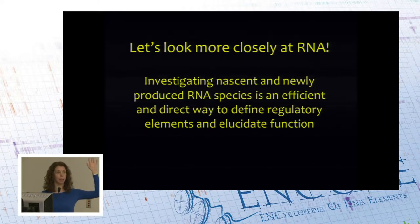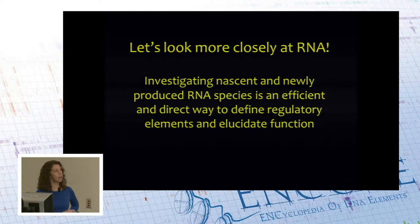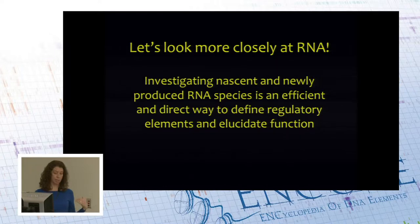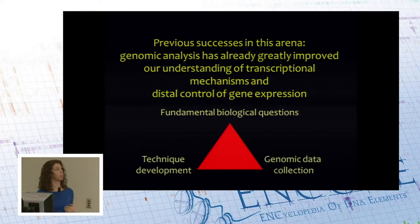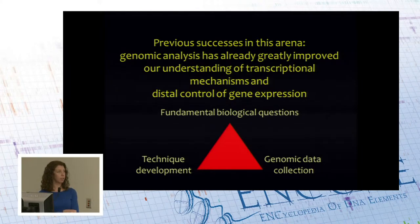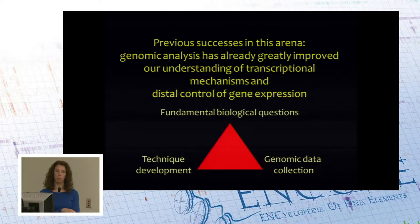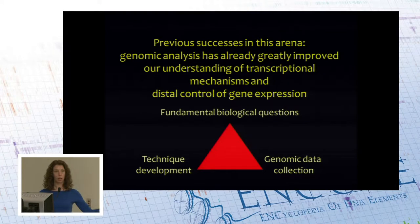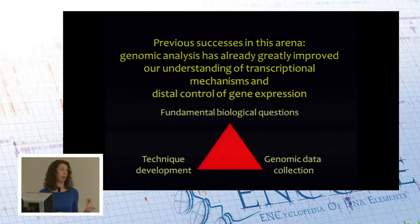My main point is that in a next iteration of ENCODE we can look more closely at RNA — not just stable RNA, but also nascent and newly produced species — because this is an efficient and direct way to look at function. As Aviv pointed out, these aren't two competing sides; basic biology and unbiased genomic data collection really function together.